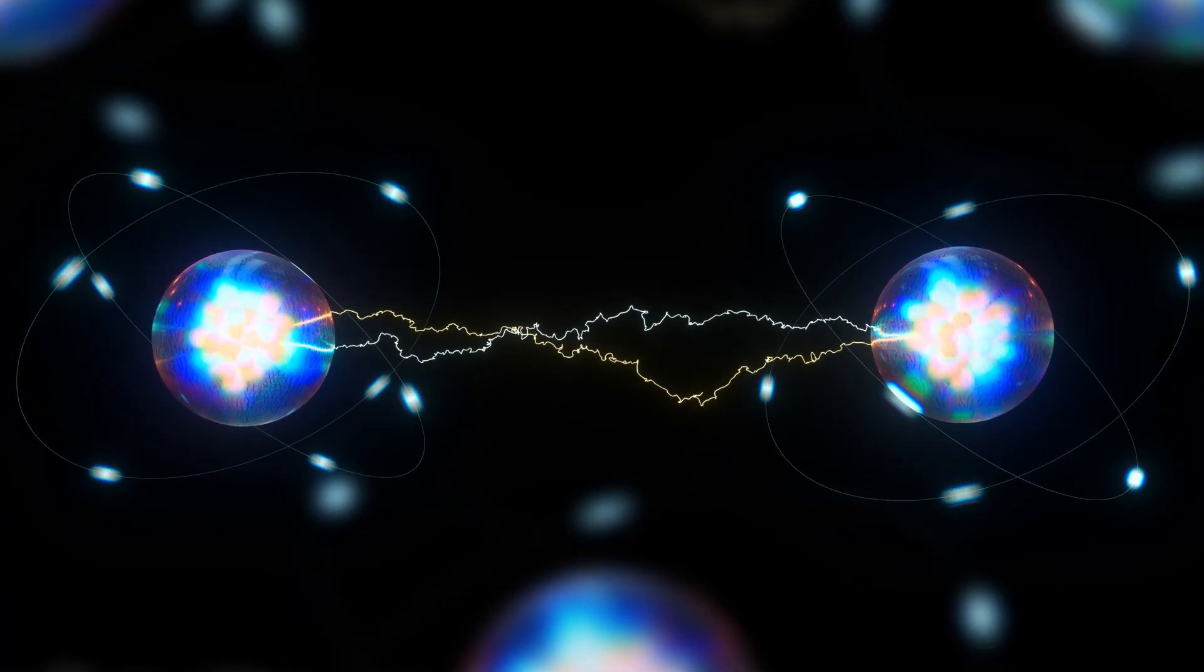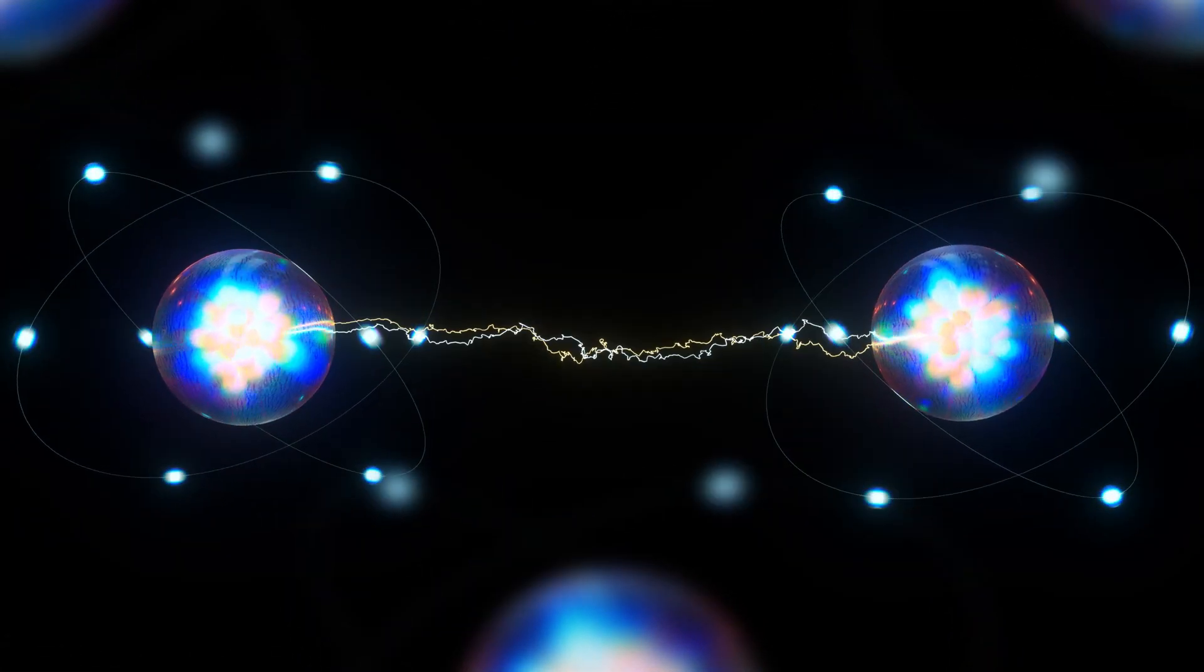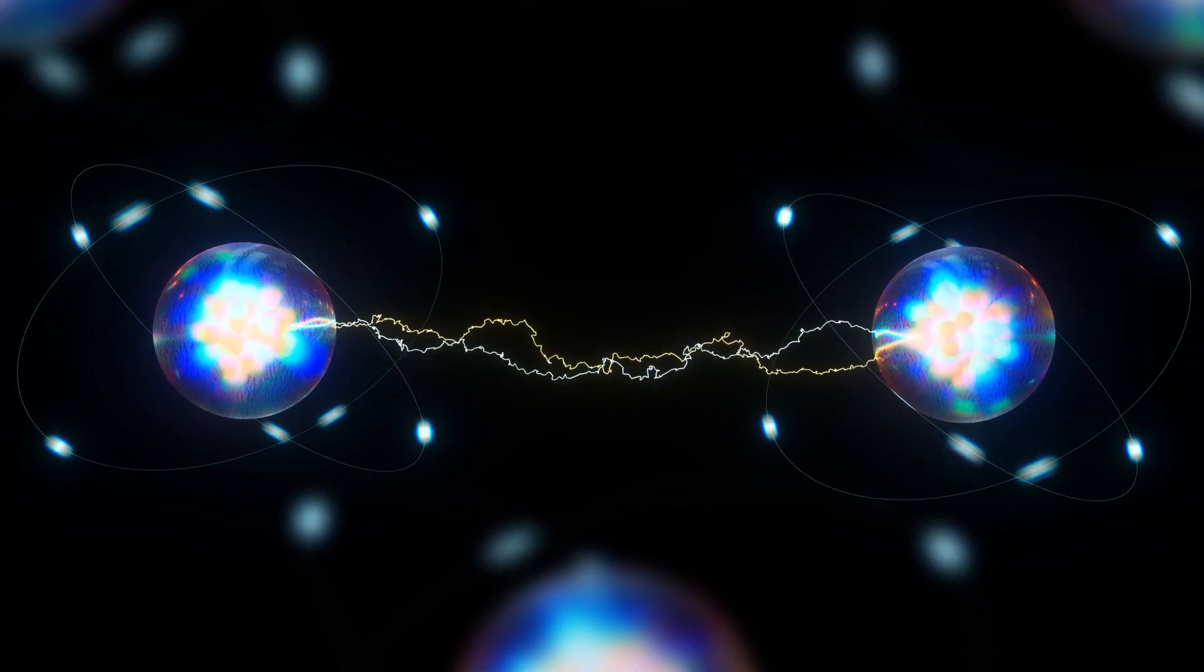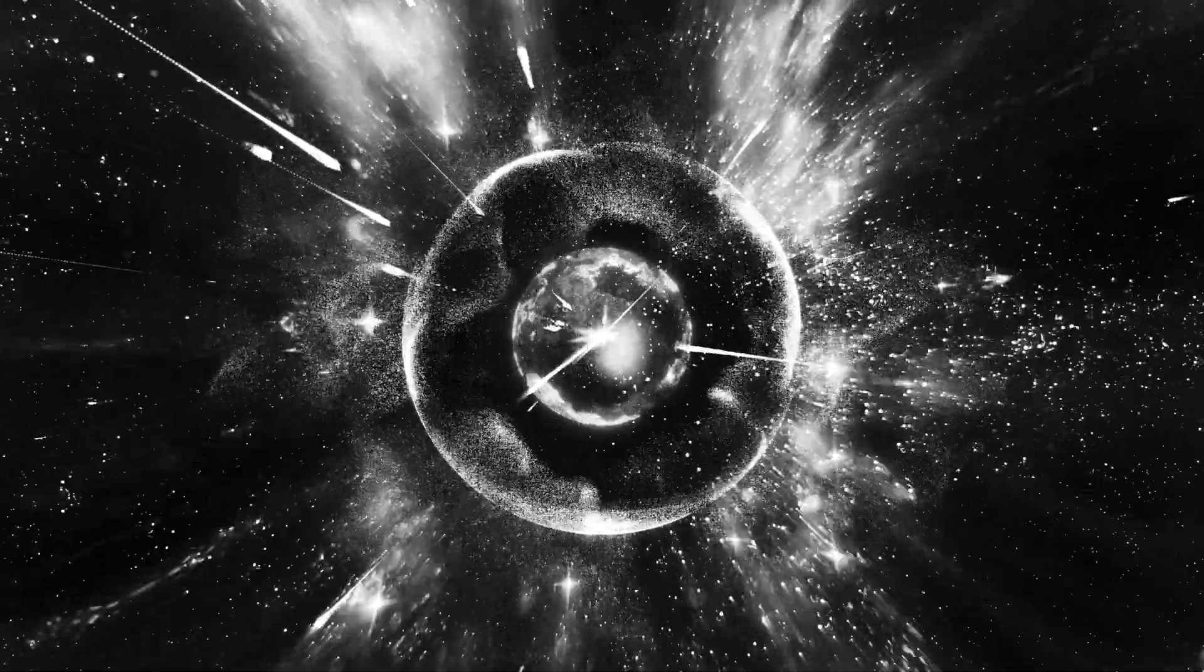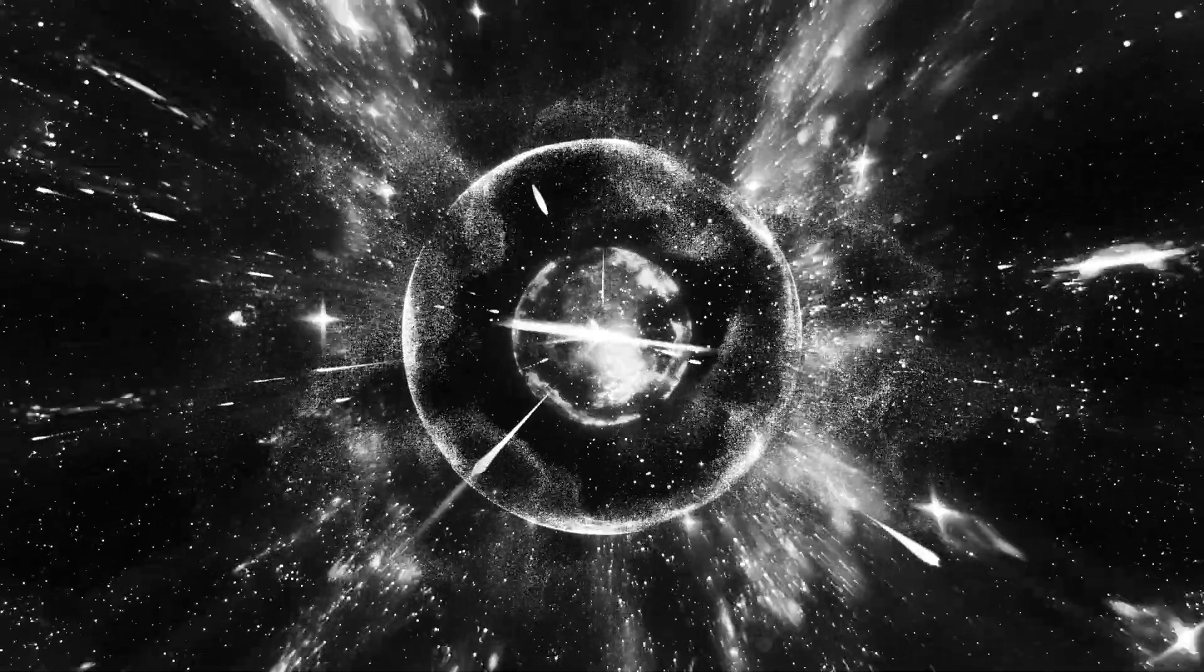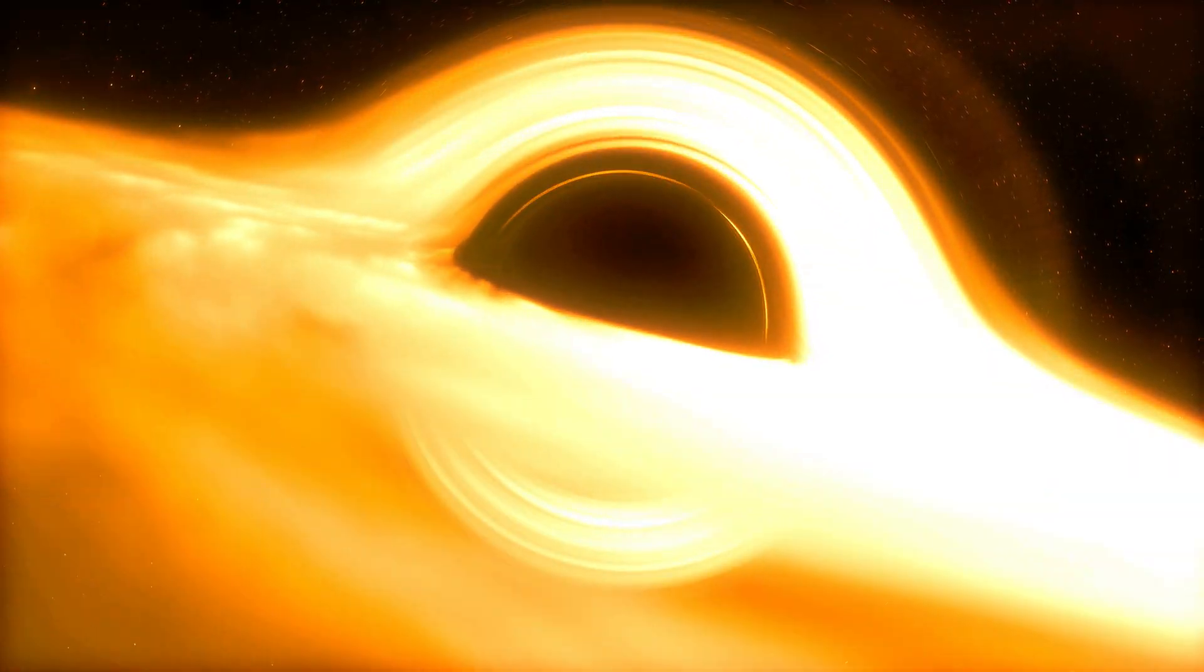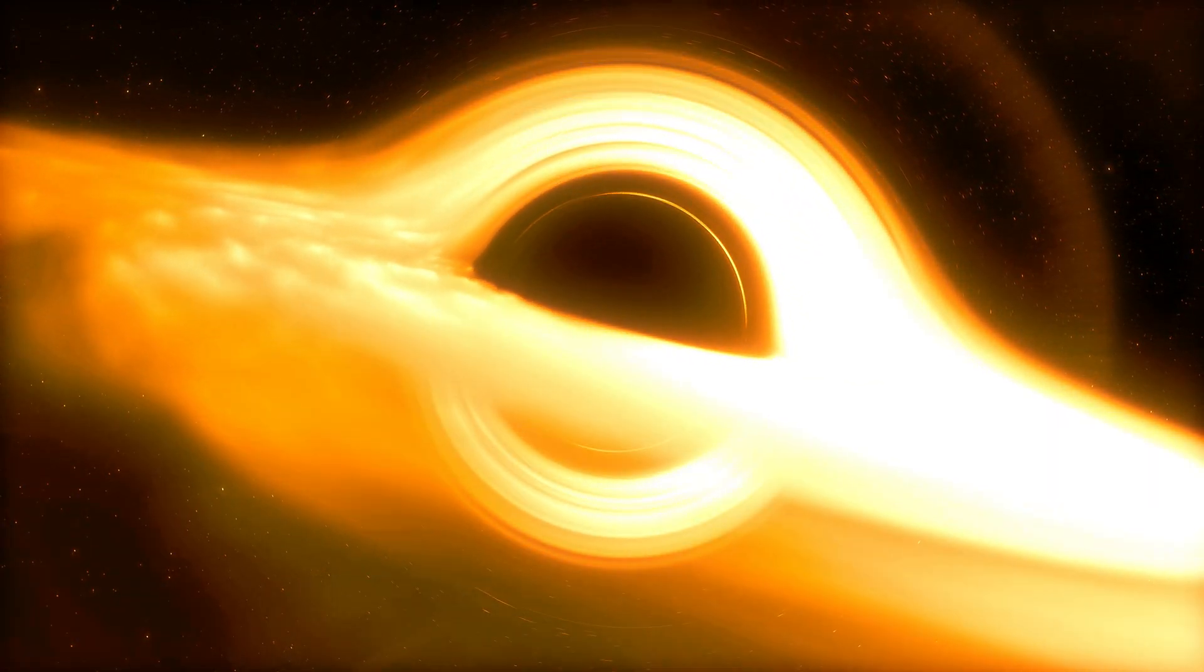The particle and antiparticle annihilate each other, returning the borrowed energy. But if annihilation doesn't occur, one particle falls into the black hole while the other escapes. The energy doesn't return, gradually causing the black hole to vanish into the cosmic void.